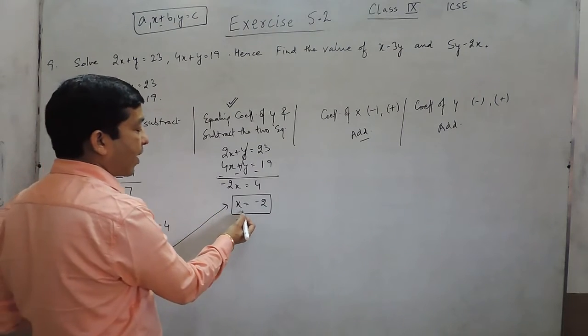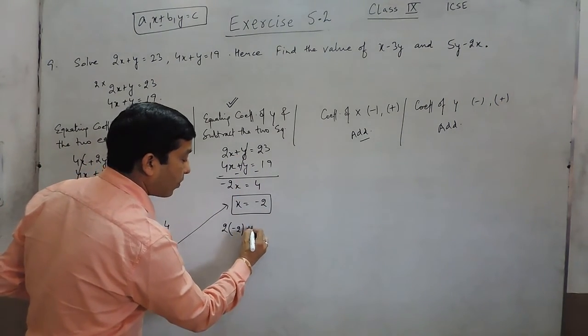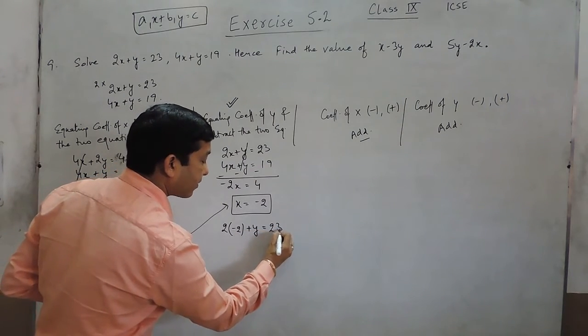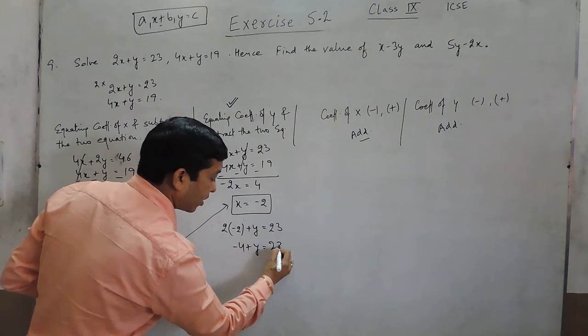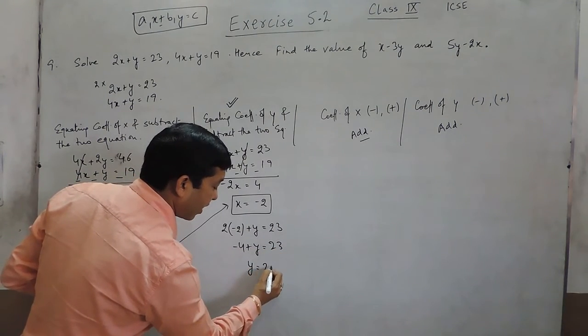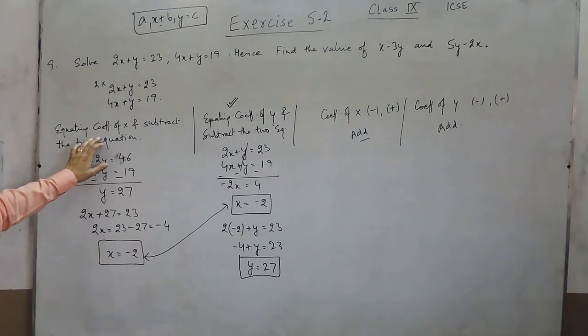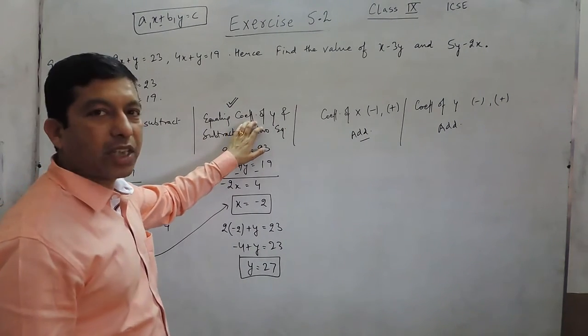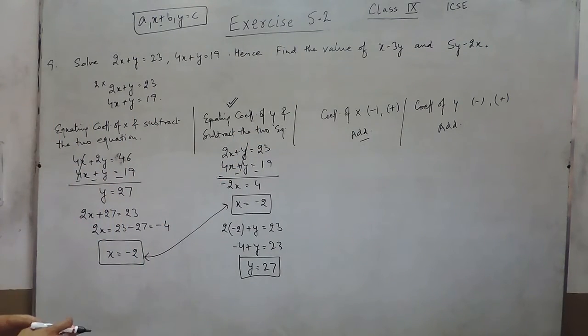And if we put the value of x as minus 2 in the first equation, so 2 multiplied by minus 2 plus y equals 23. So minus 4 plus y equals 23 and the y value becomes 27. So either we equate the coefficient of x or we equate the coefficient of y, it does not matter. The answer comes out to be the same.